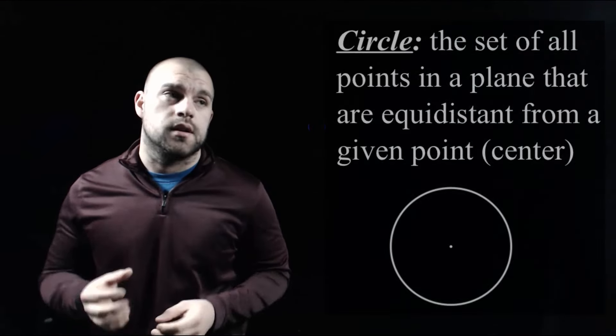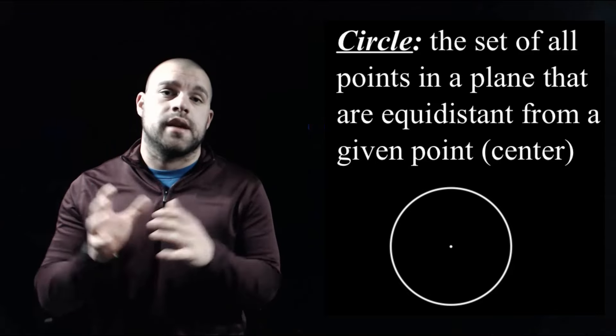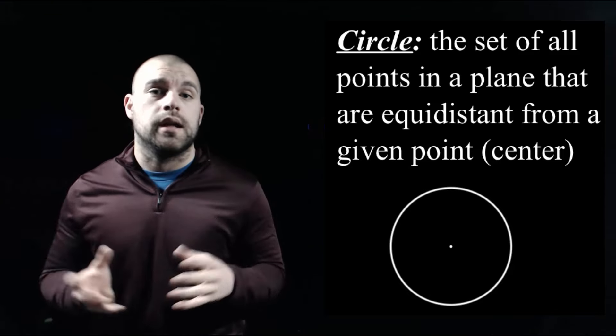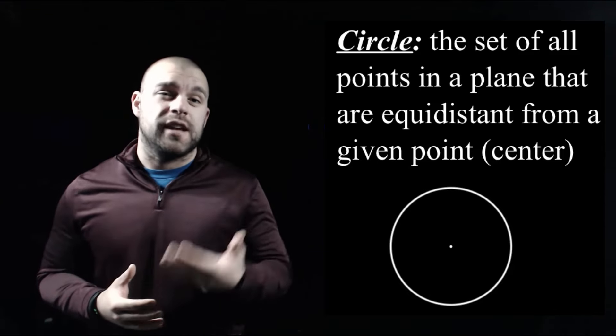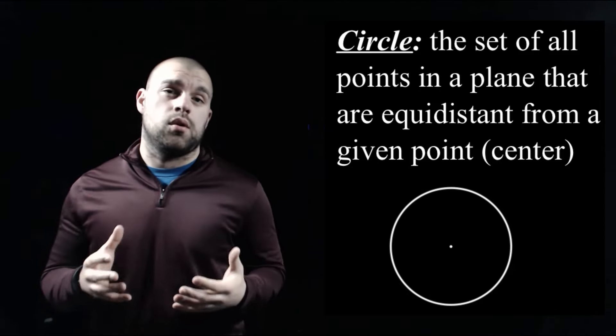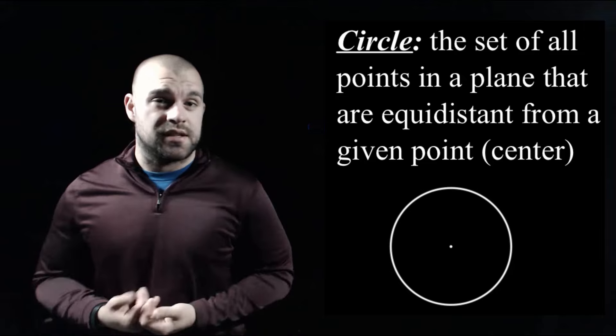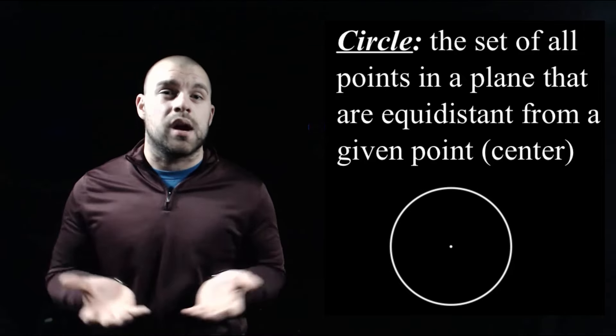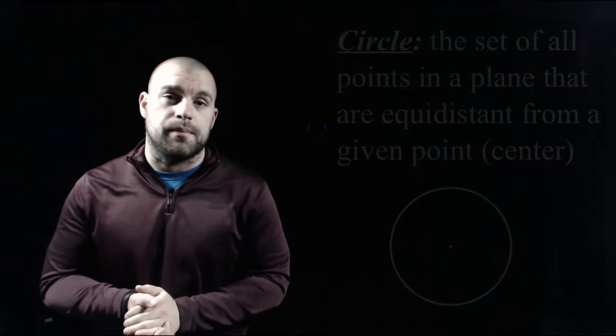As we start talking about circles, there will be a few vocab words that we're going to run through. First, let's define what a circle is. A circle is a collection of points somewhere out on a plane that are all equidistant, or the same distance away, from a center point. That's how we get our nice round circular shape.